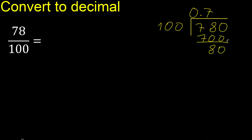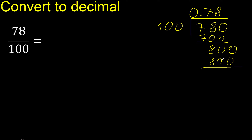80 is less than 100, so complete with 0, giving 800. 100 multiplied by which number — 100 multiplied by 8 is 800, which is exact, not greater. Subtract to get 0, therefore finish.